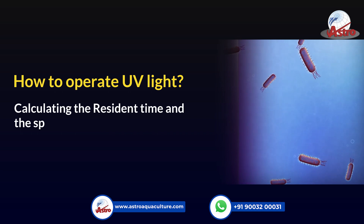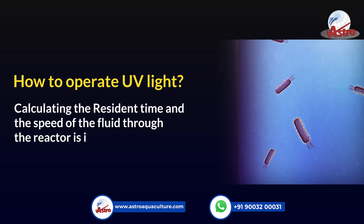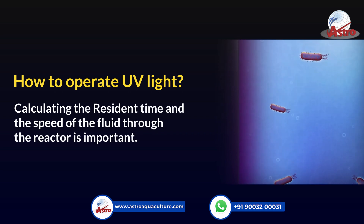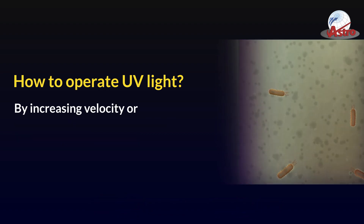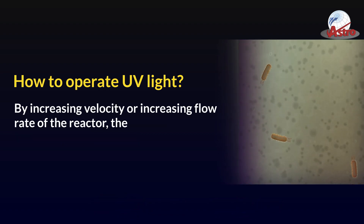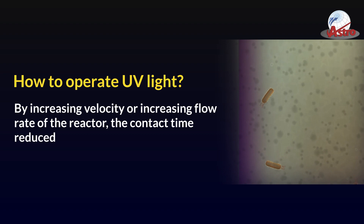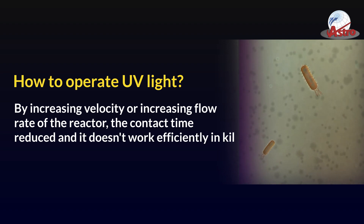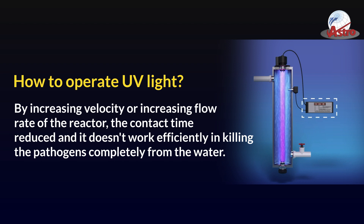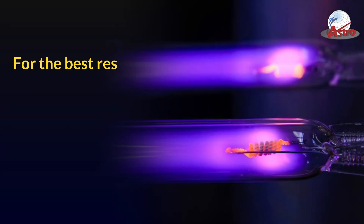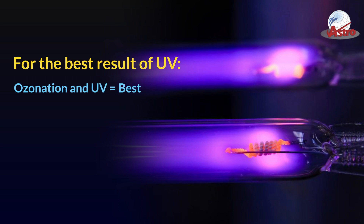Calculating the resident time and the speed of the fluid through the reactor is important. By increasing velocity or increasing the flow rate of the reactor, contact time is reduced and it doesn't work efficiently in killing pathogens completely from the water.